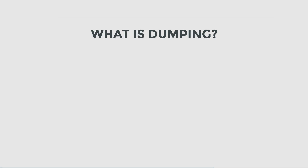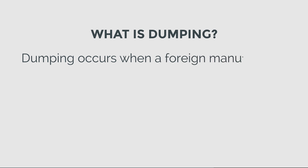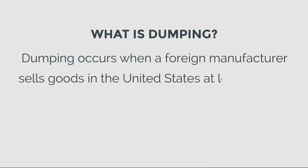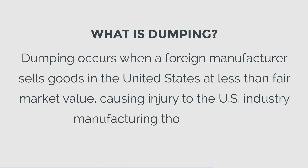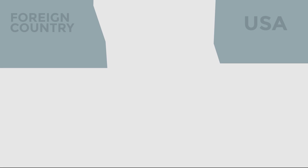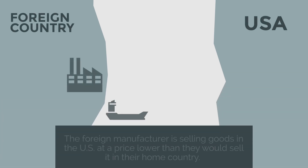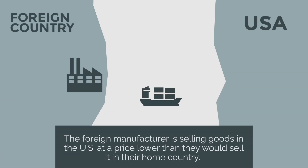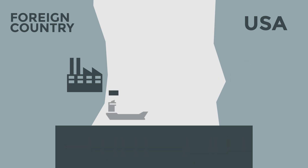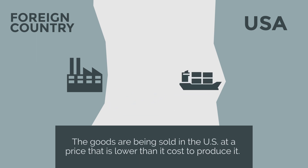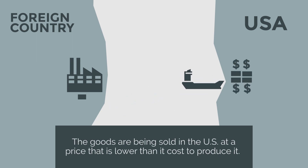First, let's quickly define what is considered dumping. Dumping occurs when a foreign manufacturer sells goods in the United States at less than fair market value, causing injury to the U.S. industry manufacturing those goods. This can be because the foreign manufacturer is selling the goods in the United States at a price lower than they would sell it in their home country, or the goods are being sold in the U.S. at a price that is lower than it costs to produce it.